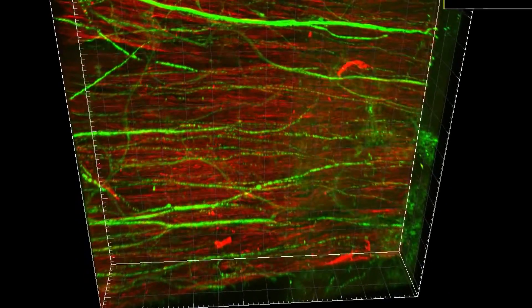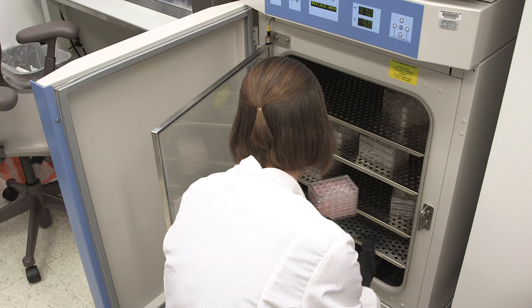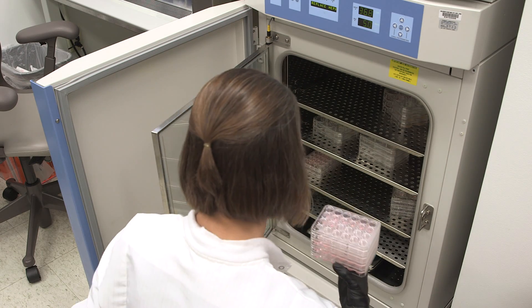In the short term, these lab-growing samples of human tissue with functioning nerves can be used as a screening tool to test new drugs before drugs go on to patient trials.